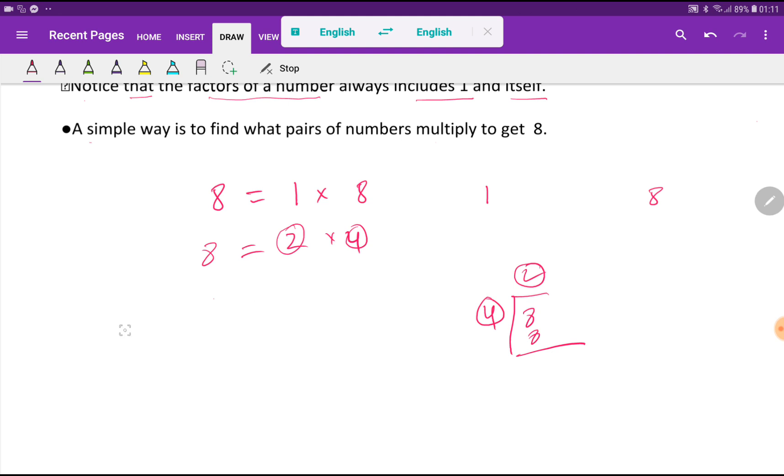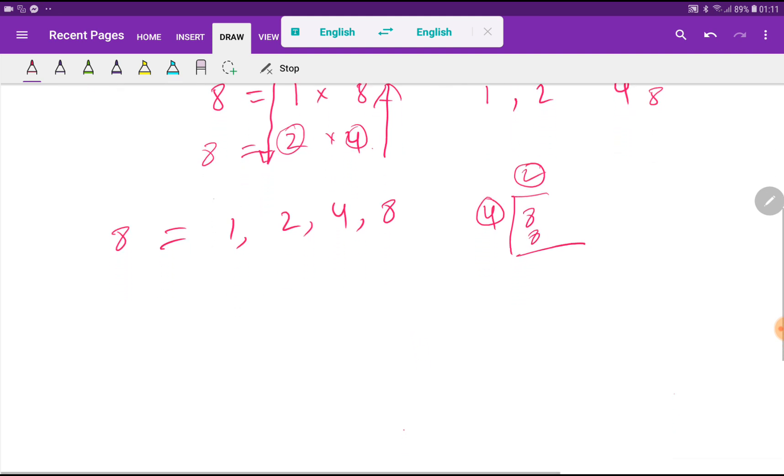So the factor of 8 is, look at here. 2, then 4. You have to write this section as first. 1, 2, then this section. 4, 8. So 1, 2, 4, 8 are the positive factors of 8.